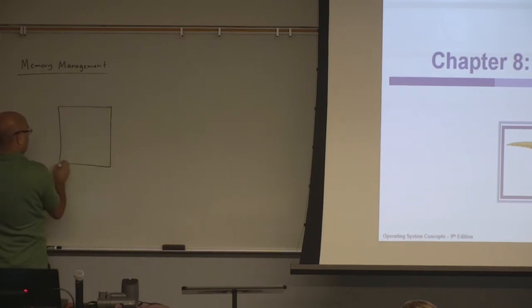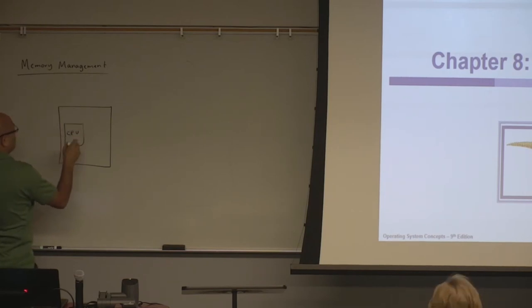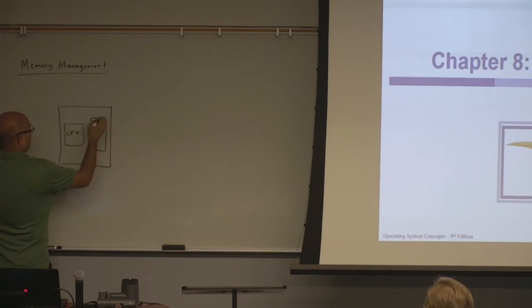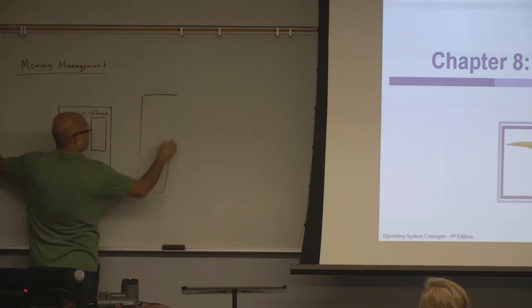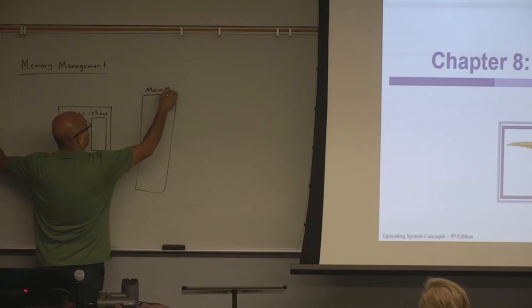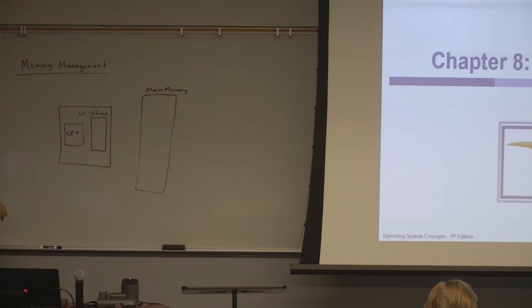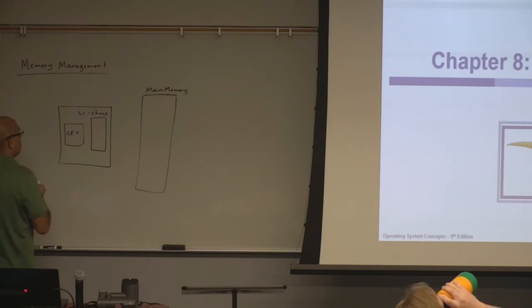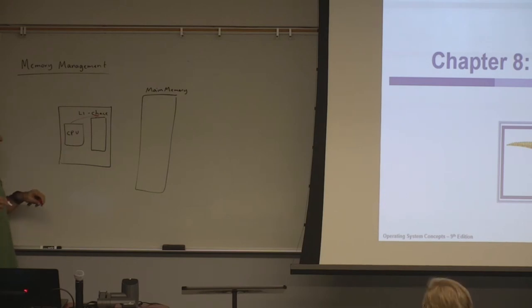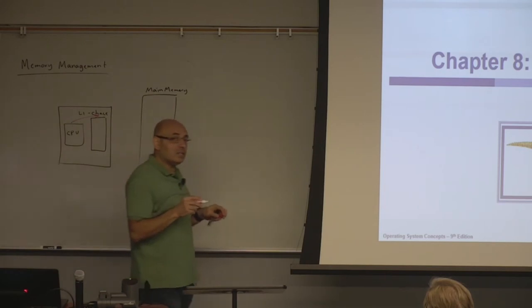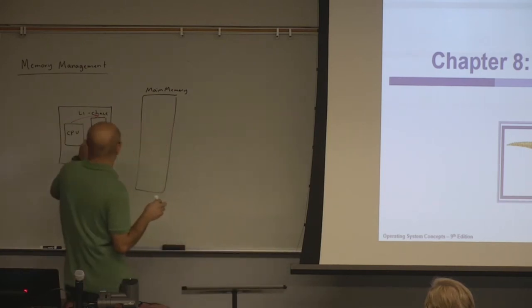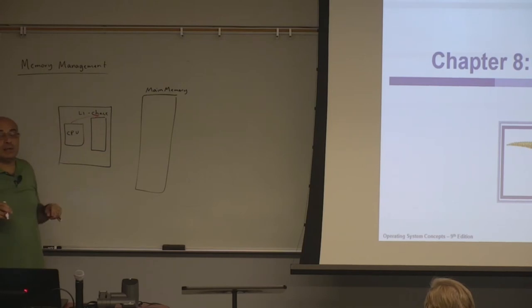You have your processor — this is your CPU and this is the chip. On the chip you normally have L1 cache, and this is your main memory which is a separate chip. On modern general purpose processors, you normally have L1 cache, L2 cache, and L3 cache — three levels of cache.